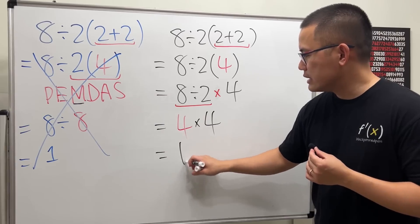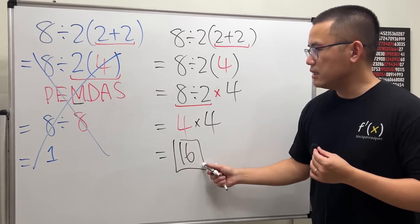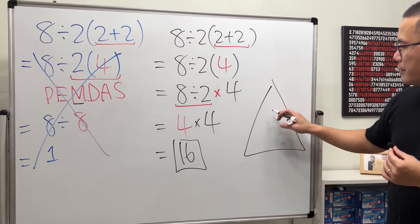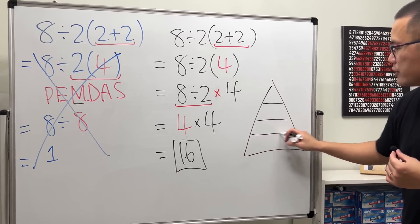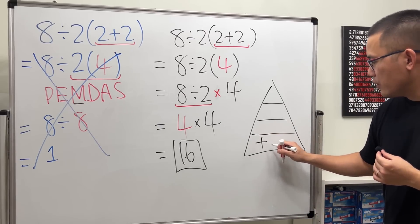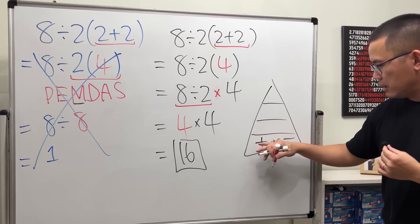Just real quick, this is the order of operations, and this is how I like to present it to my students. Addition or subtraction at the bottom level, and then the next level above is multiplication or division.